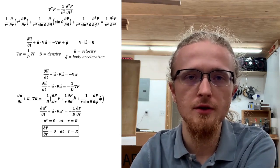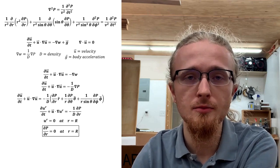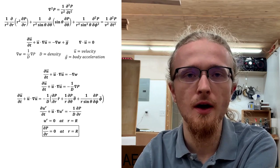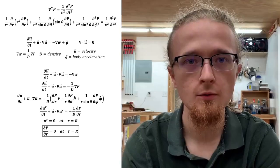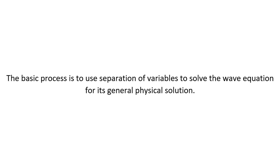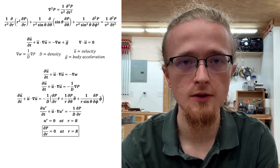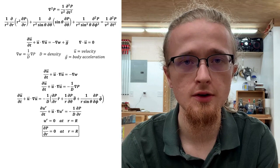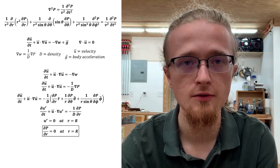Beyond the wave equation itself and this boundary condition, there are two other physical constraints that our solution must satisfy: it must have no divergences, and it also must be continuous. These are basic conditions the solution must satisfy in order to count as a physical solution. With these last constraints, we have finally finished setting up the problem. The basic process is to use separation of variables to solve the wave equation for its general physical solution. Then we can impose the boundary conditions to restrict the solution set down to just the harmonic solutions, and from this we'll get the harmonic frequencies. In general, when you first solve ordinary differential equations in a physics problem like this via separation of variables, you get a set of solutions that includes a variety of unphysical solutions, which you have to eliminate via physicality constraints.